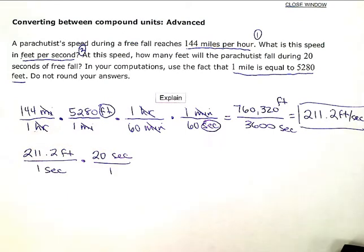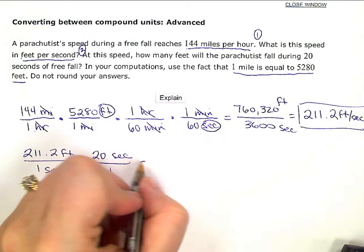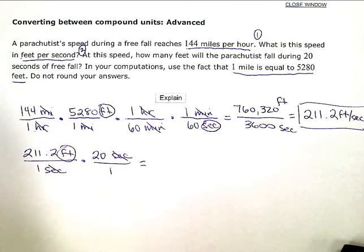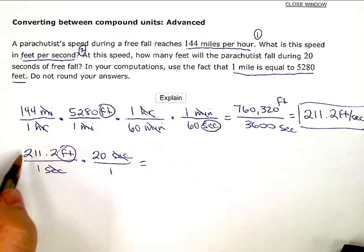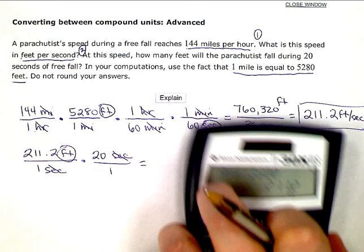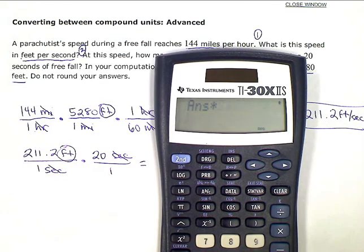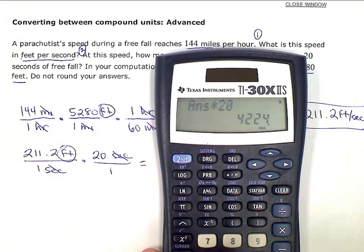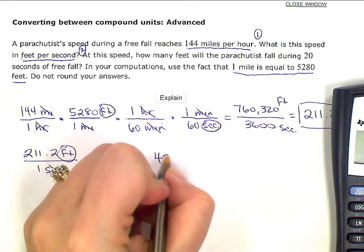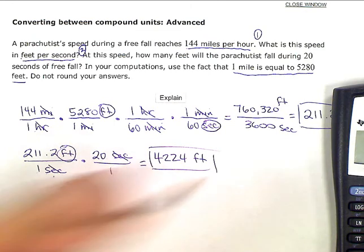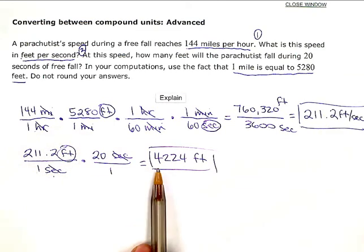And I'll just put that over 1 to keep my numerators and denominators lined up. So the seconds cancel out, and I'm left with just feet, which is the answer to the question, how many feet? So I'm going to do 211.2 times 20 in the numerator. So take my previous answer times 20 gives me 4,224 feet. And I just have 1 times 1 in the denominator. All my units canceled out in the denominator, so I can just leave that off and answer to my second question is 4,224 feet.